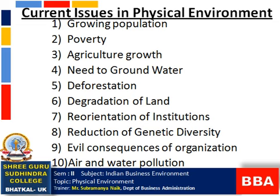Next is deforestation. Everywhere you go, forest areas are being reduced in size. People cut trees and build complexes and real estate businesses. We know what will happen if the trees are not there - from childhood we learn that rainfall will decrease and everything will be affected. When animals are not getting shelter and human beings are also not getting shelter, deforestation is clearly one of the factors affecting the physical environment.